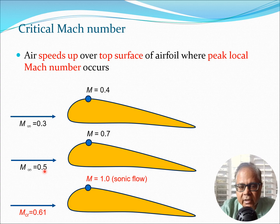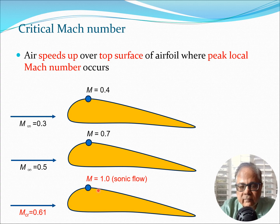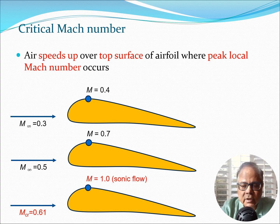If we increase the free stream Mach number to say 0.5, the Mach number at the point of maximum value on the airfoil may become something like 0.7. Continuing this experiment, we reach a certain free stream Mach number, say 0.61, where the Mach number on the surface becomes 1 — sonic flow on the airfoil surface. This Mach number at which sonic flow is first encountered is known as the critical Mach number; in this case M_critical would be 0.61.